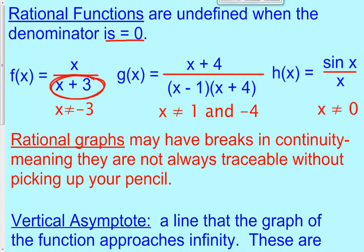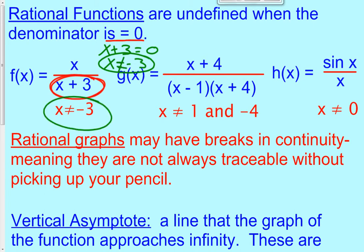So x plus 3, if it equals 0, that means x would equal negative 3. So x cannot equal negative 3, because if it did, you would end up dividing by 0. So every rational function, you've got to make sure that the denominator never equals 0.